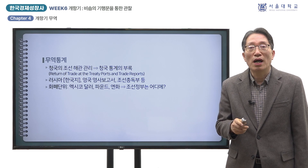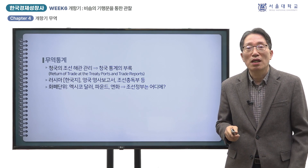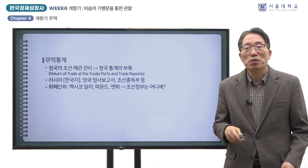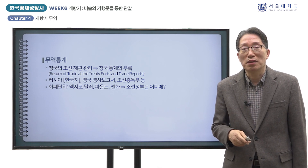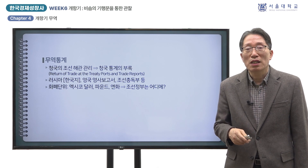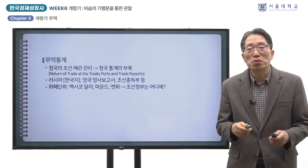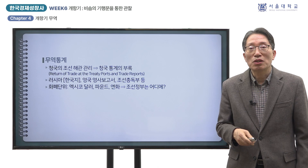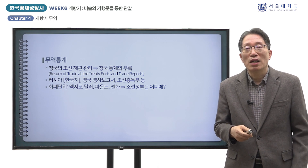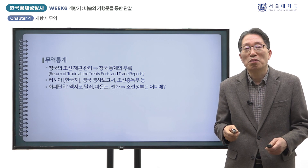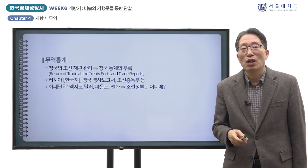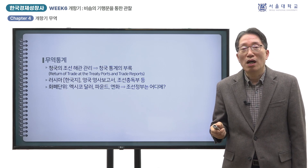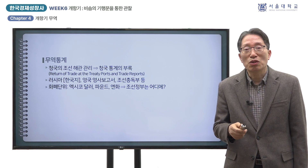이 시기 무역통계는 여러 곳에 흩어져 있는 자료를 모아서 연결한 것입니다. 각 자료에서 무역액을 표시하는 화폐 단위도 제각각으로 달랐습니다. 청국의 해관 통계서와 러시아의 한국지에 실려 있는 통계는 멕시코 달러로 표시되어 있고, 영국 영사관 자료의 금액 통계는 파운드로 되어 있으며, 조선총독부가 작성한 자료에는 일본 은화로 표시되어 있습니다. 일본 은화는 멕시코 은화와 거의 동등한 것으로 유통되었는데, 위조된 멕시코 은화가 많아지면서 일본 은화가 점차 주된 결제 및 회계수단으로 사용되게 됩니다. 이와 같은 무역통계의 상황은 당시 조선정부가 얼마나 제 역할을 하지 못했는가를 상징적으로 보여준다고 생각합니다.